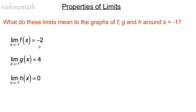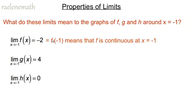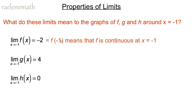Because the limit value exists, we know that the function is either continuous or has a hole, which is almost continuous. We just don't know about the function value. If the function value — the height that y is when x is negative 1 — is the same as the limit value of negative 2, that means the function f is continuous at x equal to negative 1.